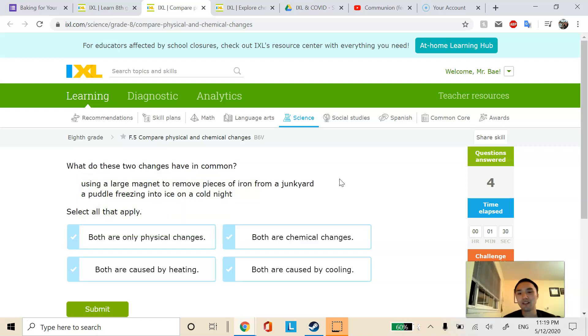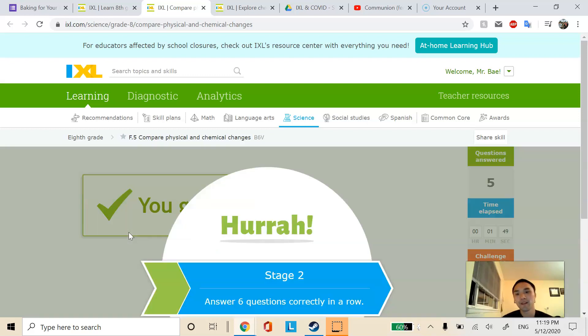Using a large magnet to remove pieces of iron from the junkyard, so you're separating the mixtures from each other. So that's a physical change. A puddle freezing into ice on a cool night, that's a state of matter change. That is also a physical change. It's not clear cut if the magnet's causing any heating or cooling. So I'd ignore those both there.